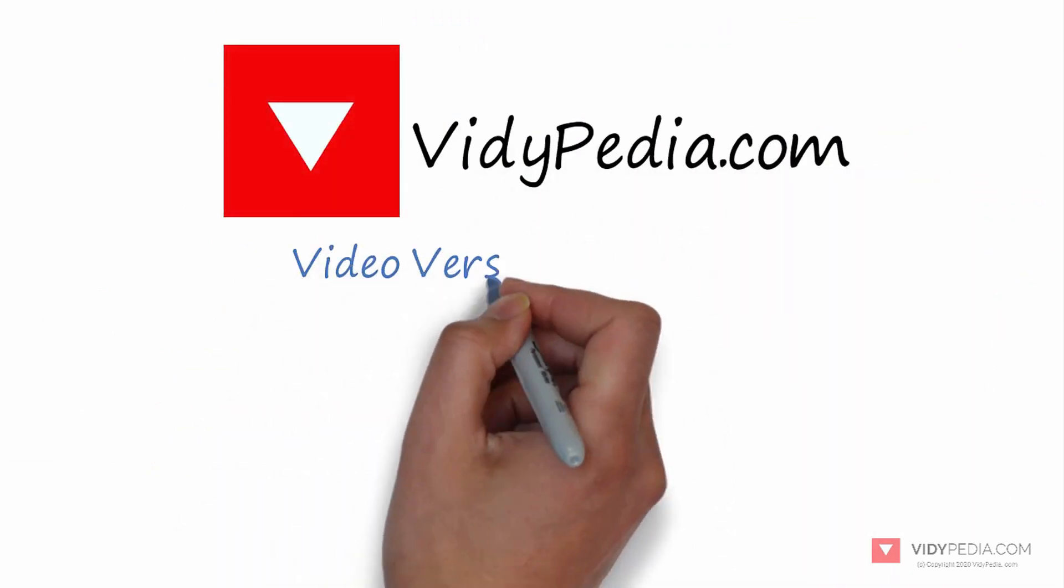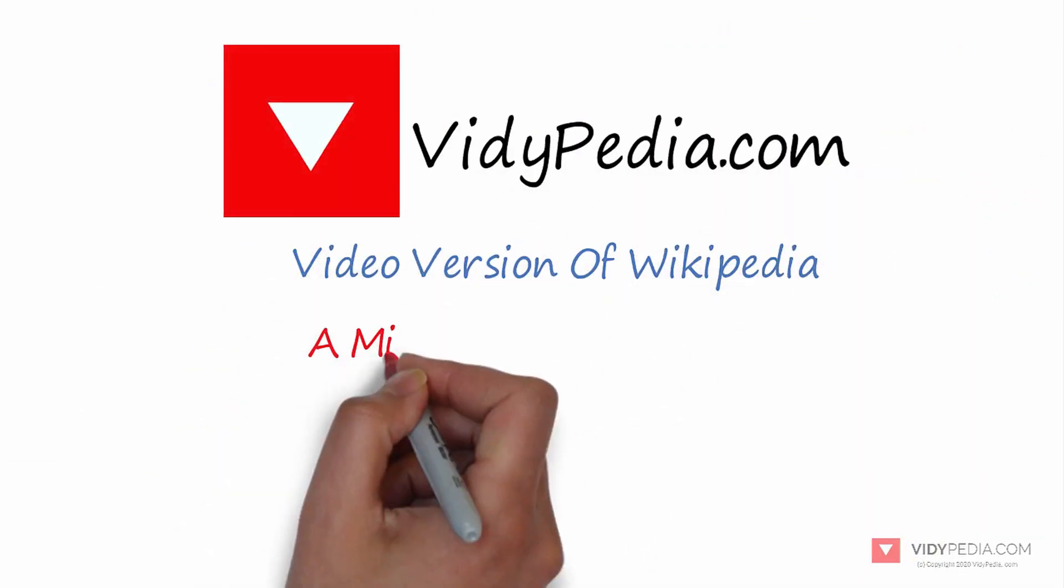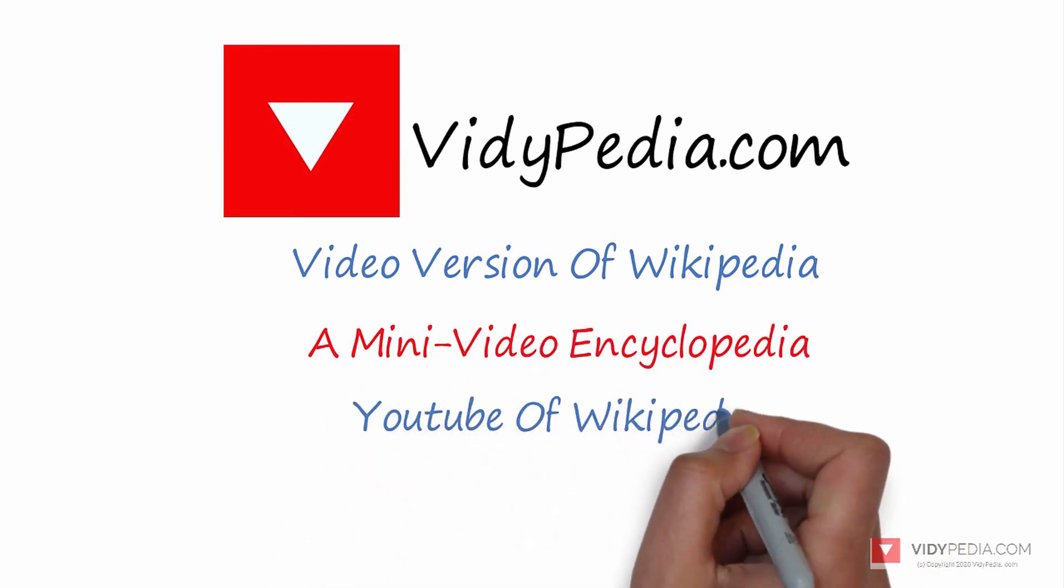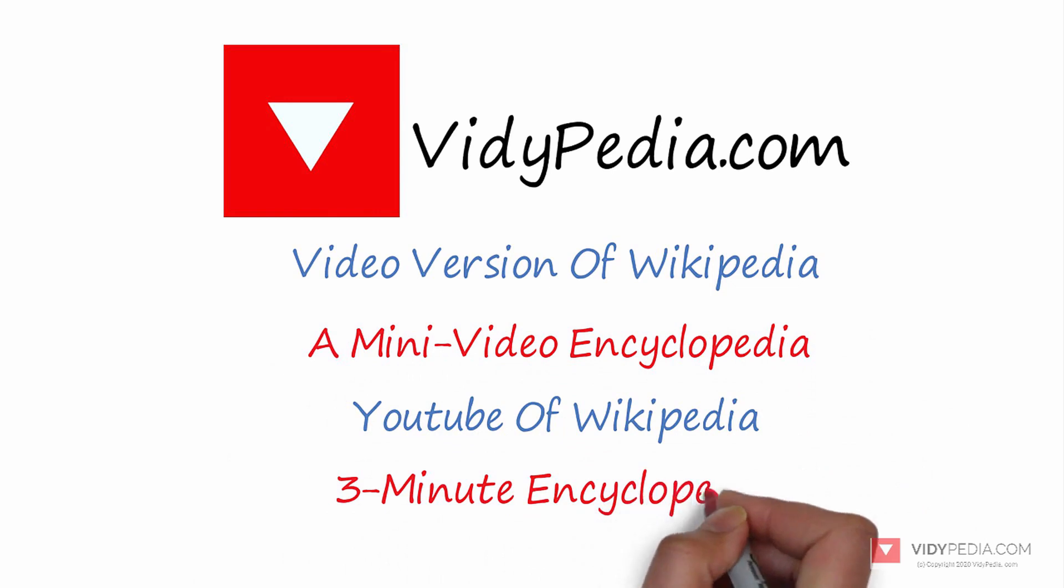Vidipedia.com is the video version of Wikipedia, a mini video encyclopedia, dubbed the YouTube of Wikipedia, or the 3-Minute Encyclopedia.